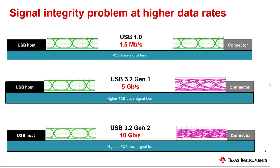USB redrivers are primarily designed to compensate for system ISI by using receiver or transmitter equalization. Inter-symbol interference, or ISI, is the distortion of a signal when one symbol interferes with subsequent symbols. For more information on ISI and other impairments, please see the 'What is a Signal Conditioner' video.